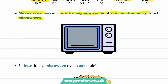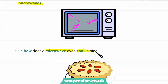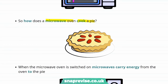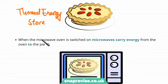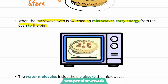You close the door and switch the microwave on, and it starts firing around these electromagnetic waves. How does this help the microwave oven to cook something, for example a pie? The whole goal of any oven should be to heat up the pie — to put energy into its thermal energy stores. When the microwave oven is switched on, the microwaves carry energy from the oven to the pie, bringing that energy to it.